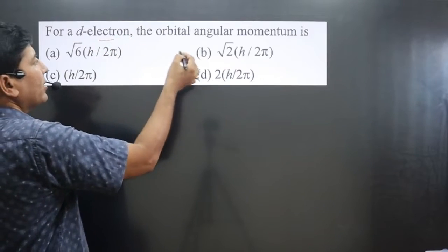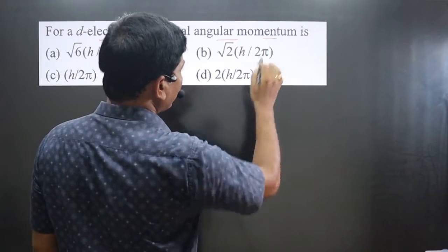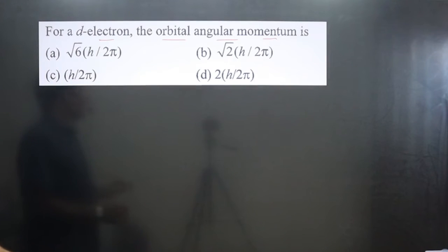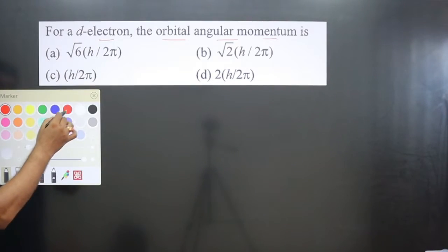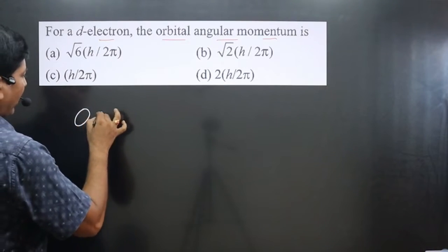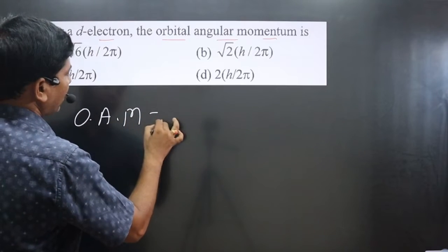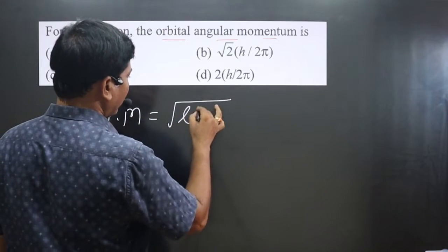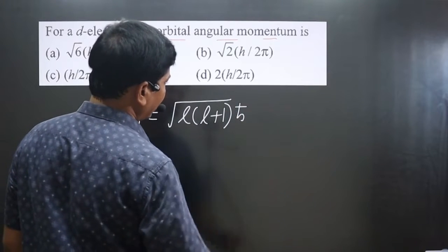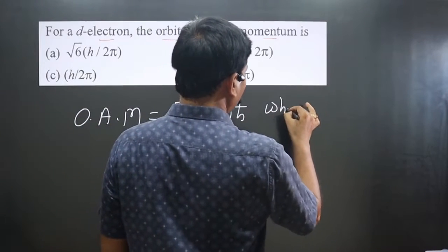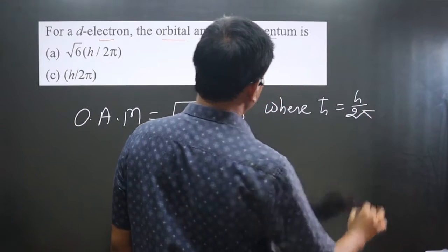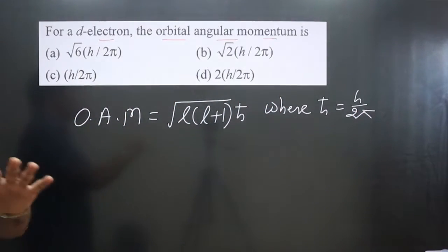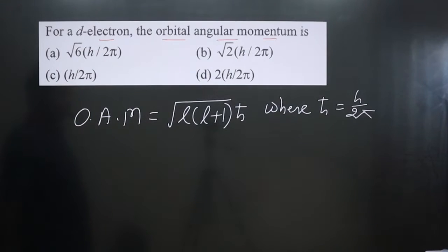The question asks: for a d electron, what is the orbital angular momentum? We have to calculate the orbital angular momentum. The formula for orbital angular momentum is under root of l(l+1), multiplied by h-bar, where h-bar is equal to h upon 2π.